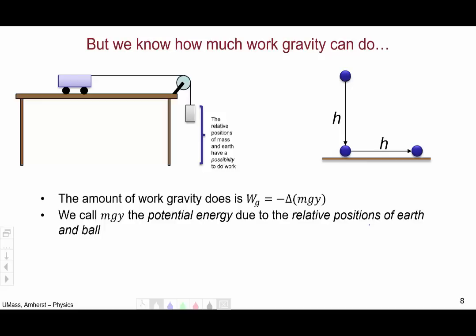We call this mgy the potential energy due to the relative positions of the earth and the ball, or in the case of the cart, the relative positions of the earth and the hanging mass. Mathematically, we write this as ug equals mgy.